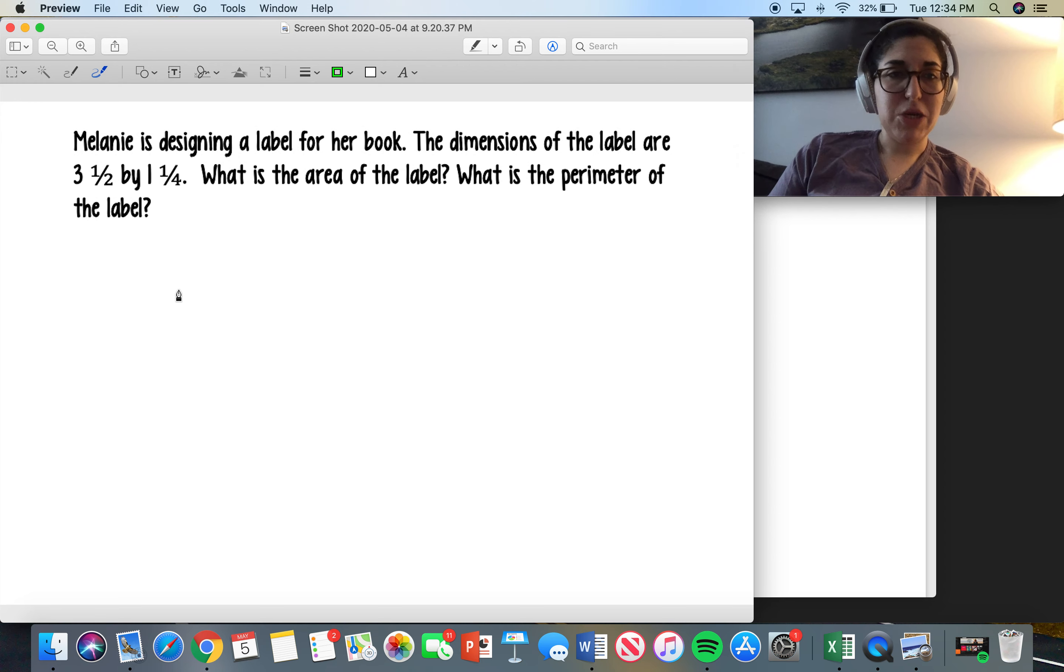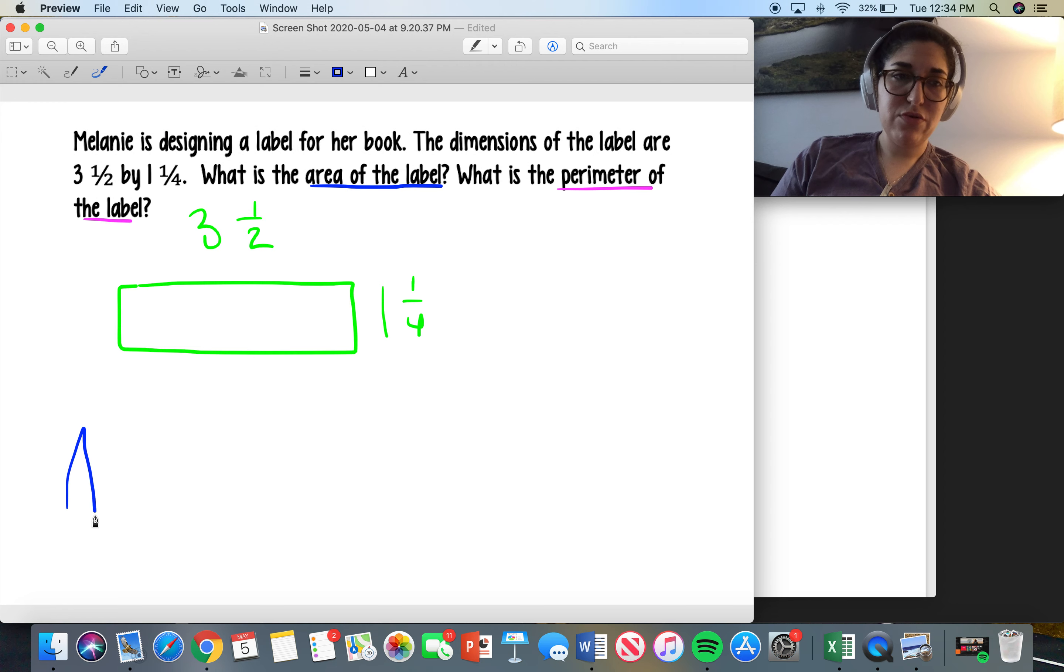So let's think about this. Melanie's designing this label for her book and the dimensions are three and a half by one and one-fourth. So if I think about here's my label, remember the label is going to fit in the book. Let me actually make it a little more realistic. Let's say it's three and a half by one and one-fourth. I know that's not perfect but it's alright.